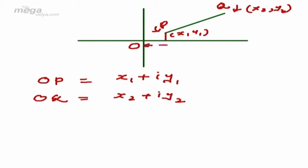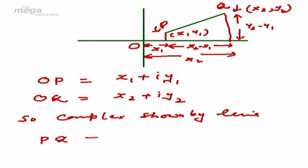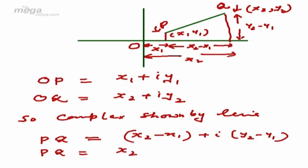This distance is X1 and this distance is X2, so the horizontal distance will be X2 minus X1. Similarly, the vertical distance will be Y2 minus Y1. So the complex number shown by line PQ will be (X2 - X1) + i(Y2 - Y1), that is PQ = (X2 + iY2) - (X1 + iY1), which equals Z2 minus Z1.